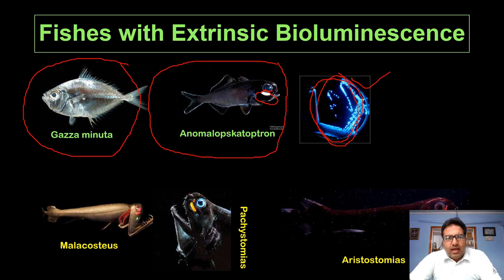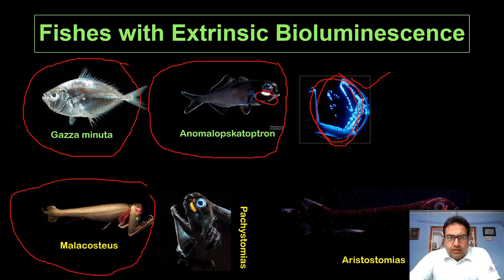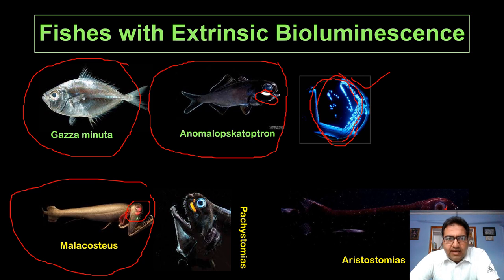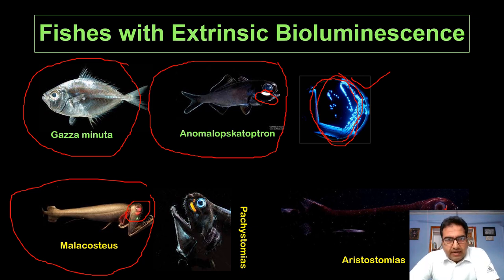Other fishes such as dragon fishes belonging to Malacosteus and order Stomiiformes emit bluish-green light. Most luminescent fishes emit bluish-green light, but dragon fishes produce long-wavelength red light. Malacosteus emits red light, while other dragon fishes of Stomiiformes emit blue-green light.